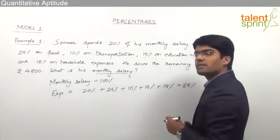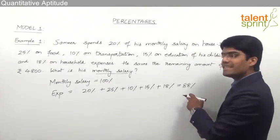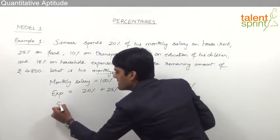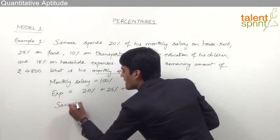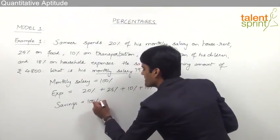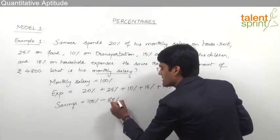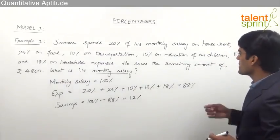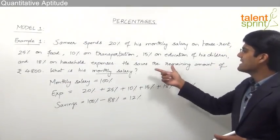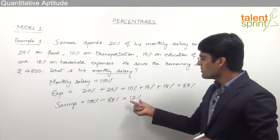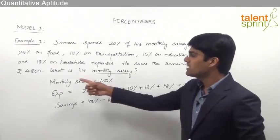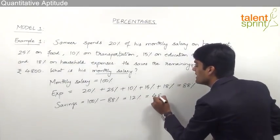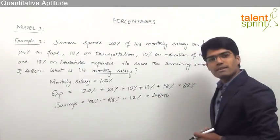We know that his monthly salary is 100%, out of which 88% has been spent. So his savings will be equal to 100% minus his total expenses of 88%, which comes out to be 12%. And in the given question, it is clearly stated that he saves the remaining amount, which is 12%, and that is equal to Rs. 4,800. So his monthly savings of Rs. 4,800 are equivalent to 12%.